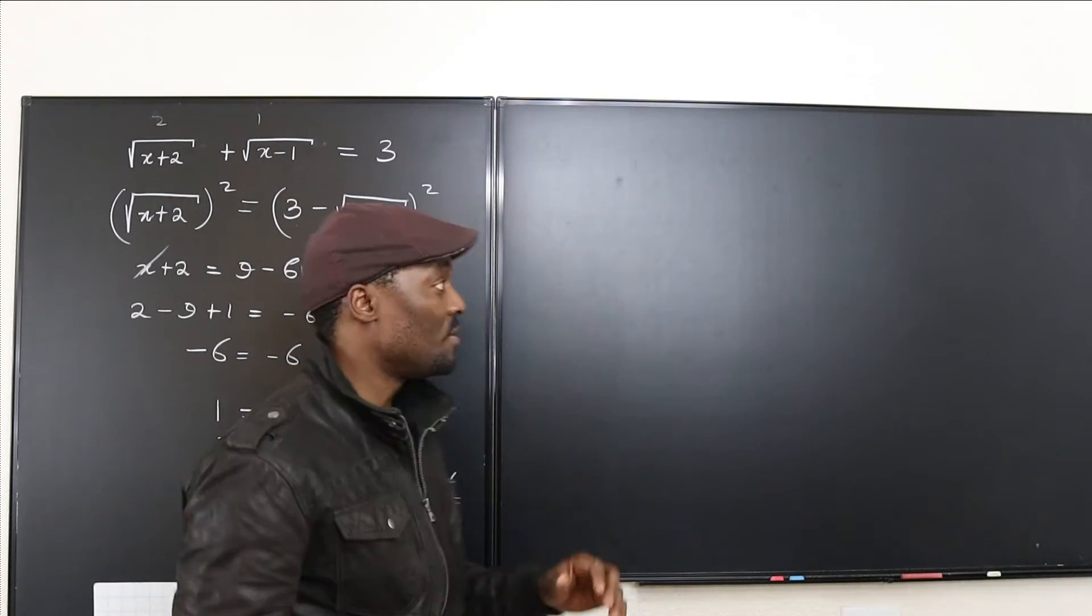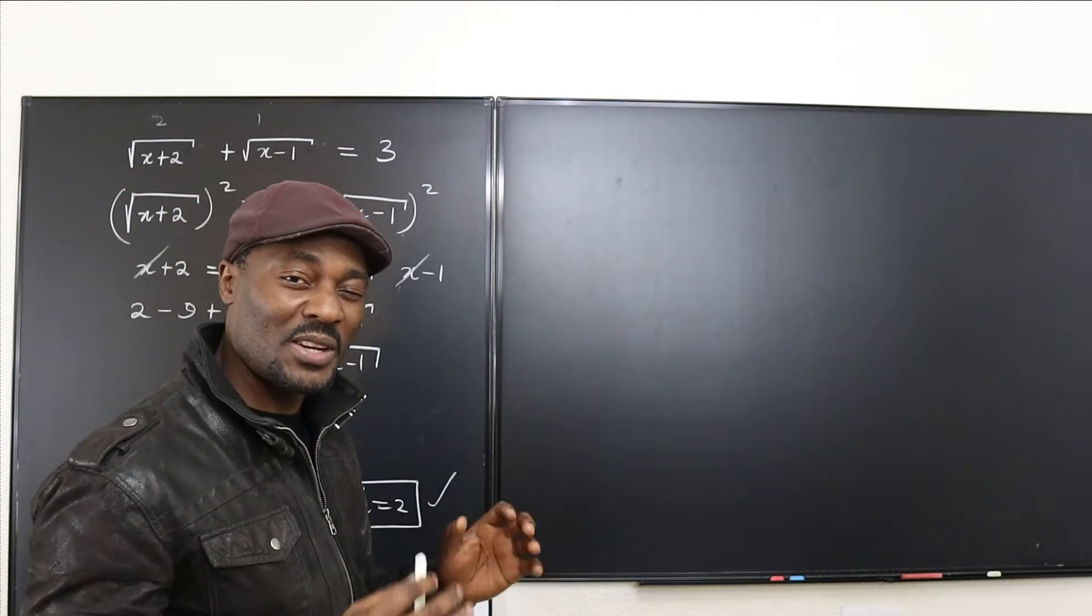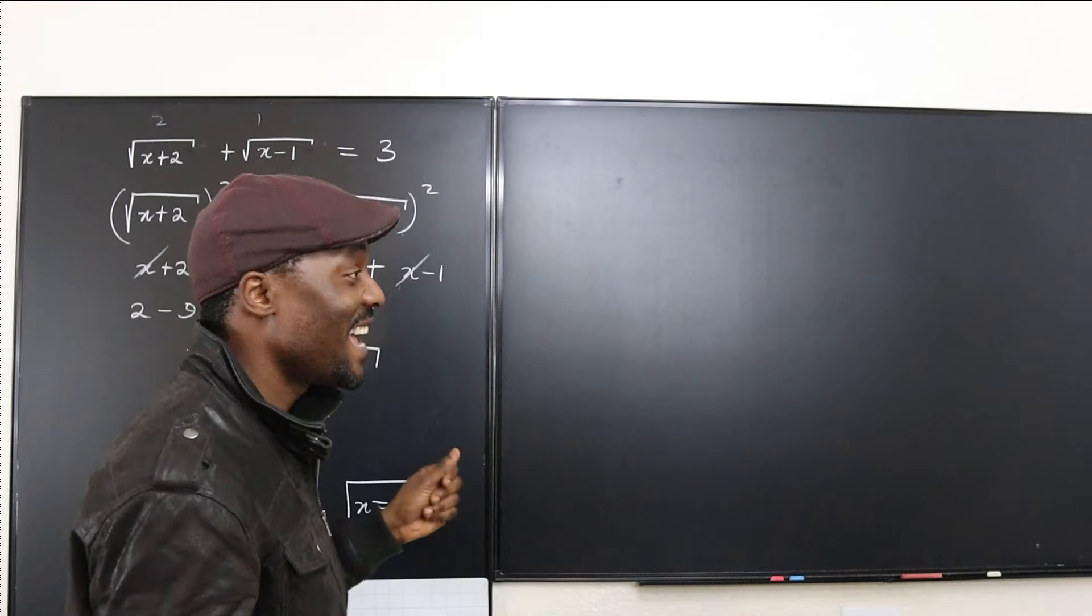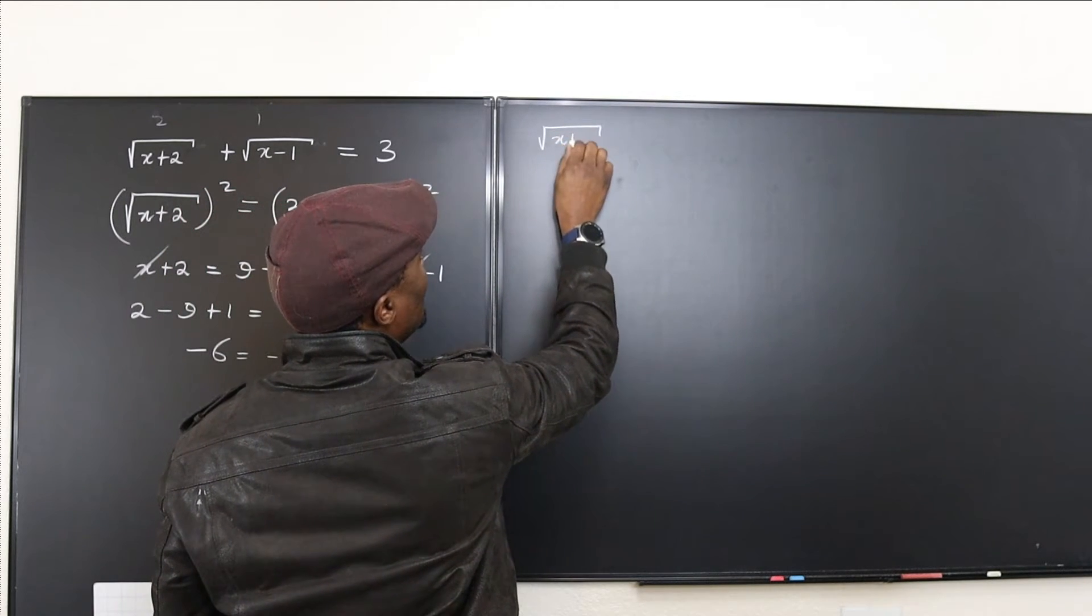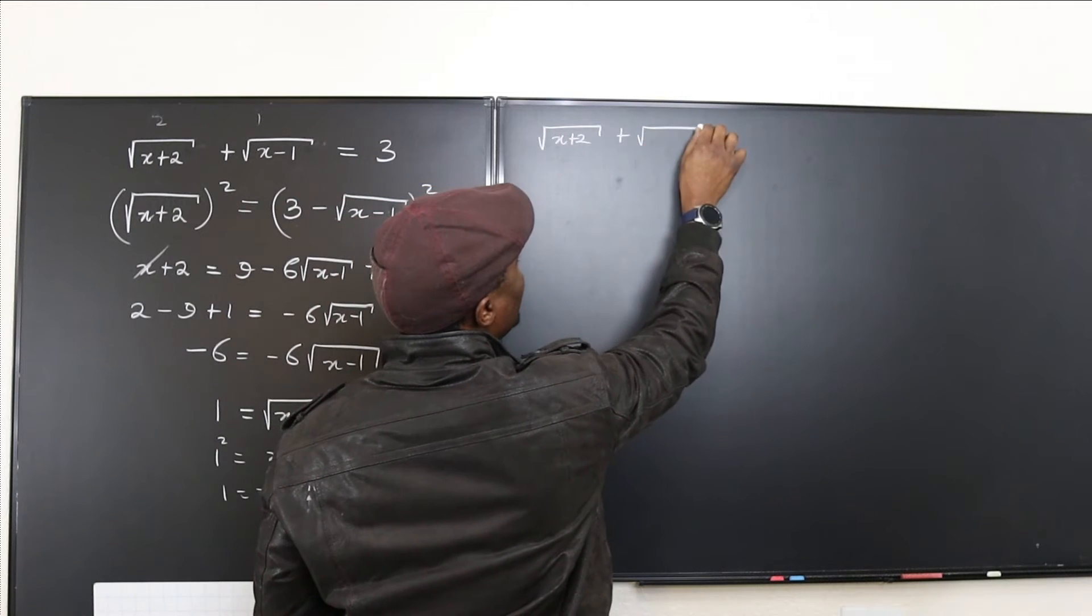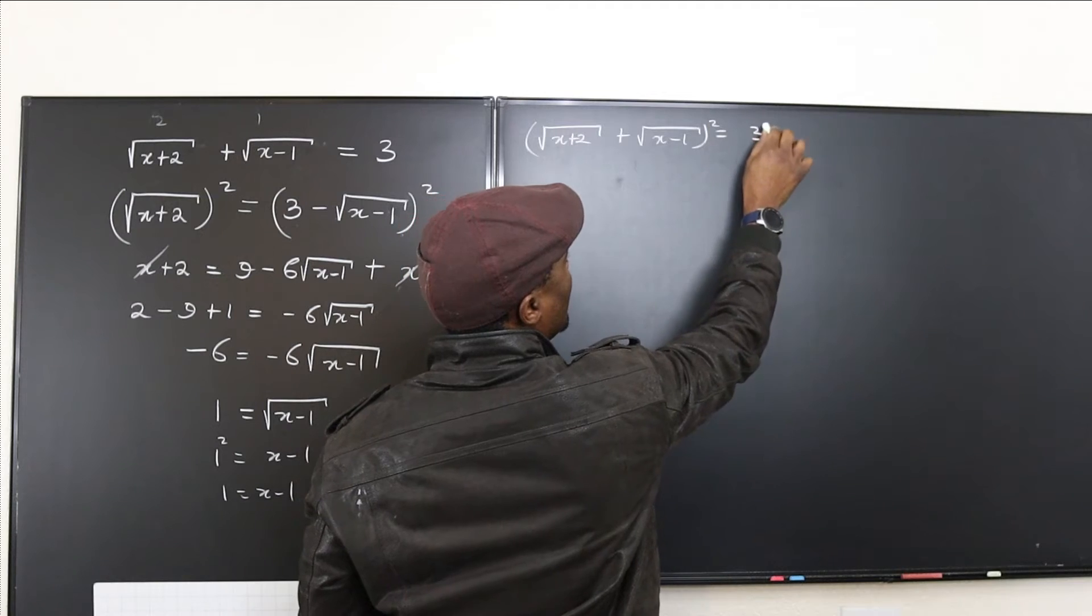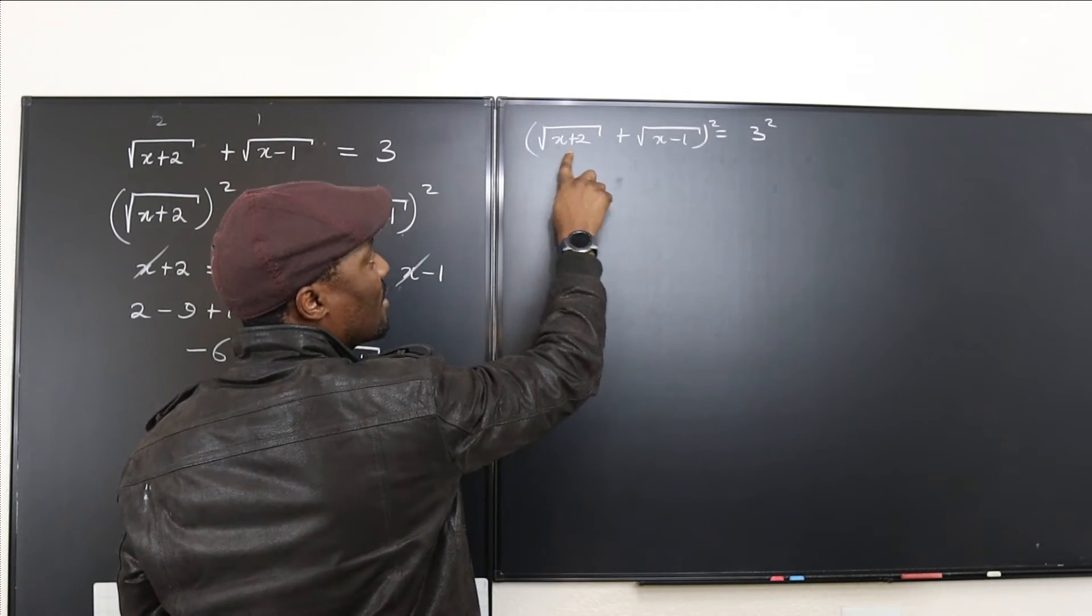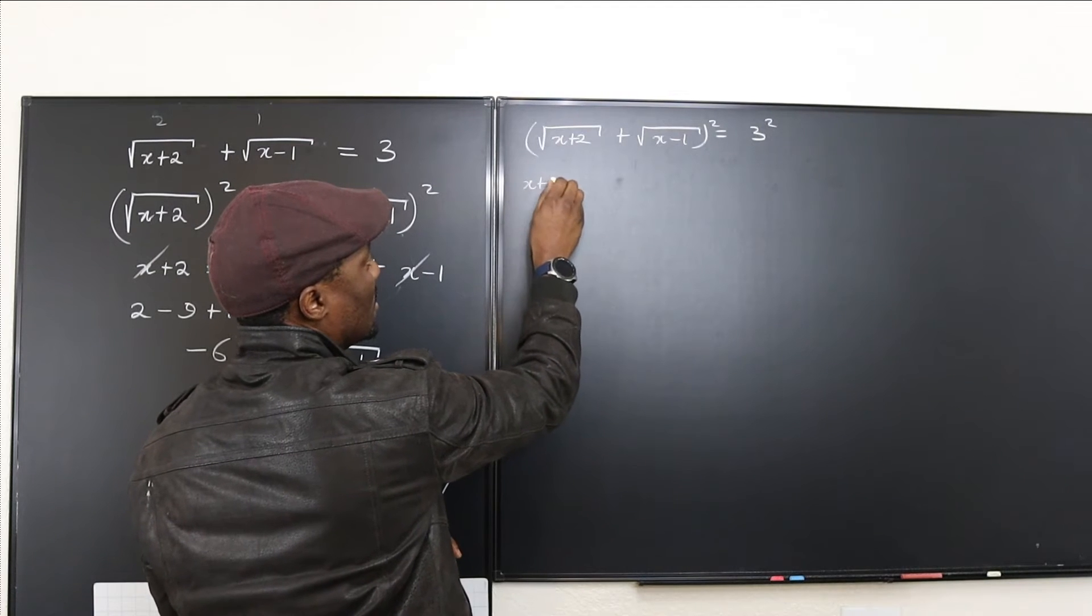So remember, if you choose to not move one of the radicals to the other side, you're going to be dealing with a lot more complicated expressions. And let me just show you what's going to happen. You're going to have rad x plus 2 plus rad x minus 1 equals 3. If we choose to square both sides, you're going to end up with a binomial expansion. We're going to square this. It's going to give us x plus 2.